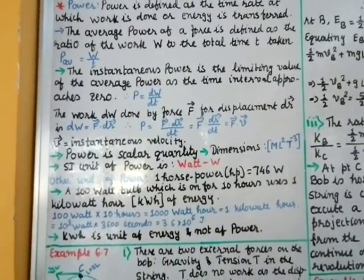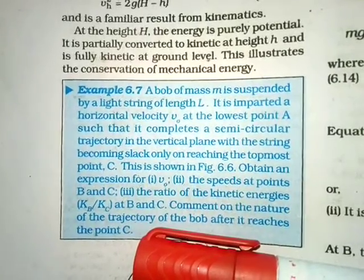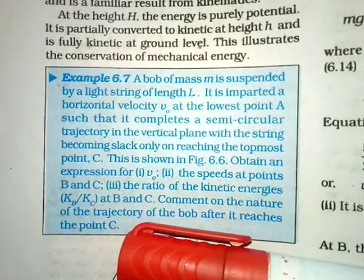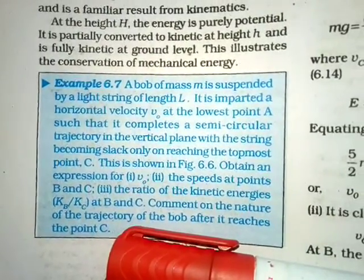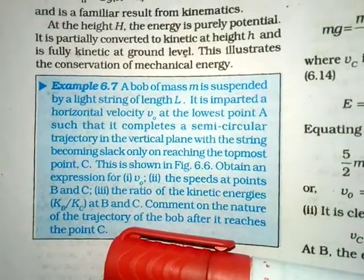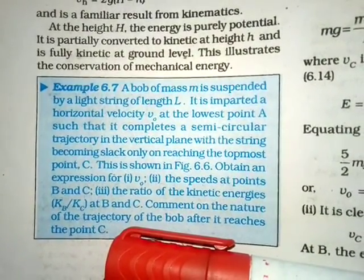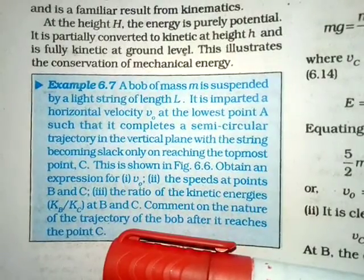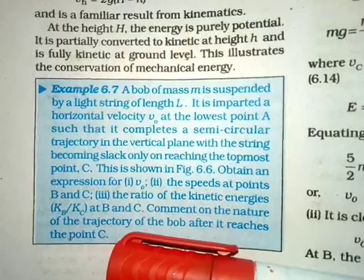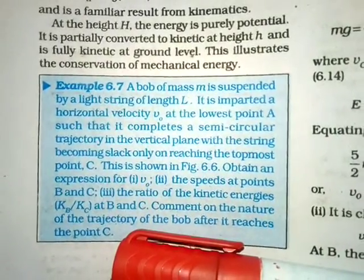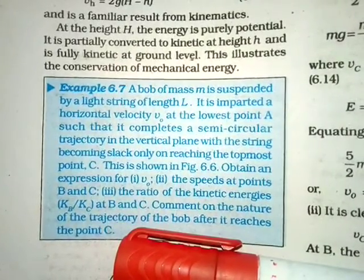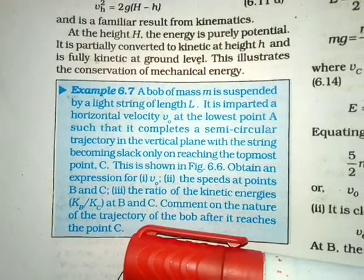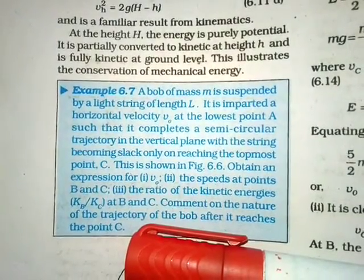Example 6.7: A bob of mass m is suspended by a light string of length L. It is given a horizontal velocity v₀ at the lowest point A, such that it completes a semicircular trajectory in the vertical plane, with the string becoming slack only at the topmost point C. Find: (1) v₀, (2) speeds at B and C, (3) ratio of kinetic energies K_B/K_C, and comment on the trajectory after point C.